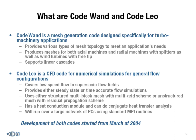Code 1 is a mesh-generation code designed specifically for turbomachinery applications. You can do many different types of mesh topologies such as H-Mesh, OH-Mesh, OHH-Mesh, and you can do both axial machines, for instance multi-stage compressor, multi-stage turbine, as well as radial compressor and turbine with splitters.